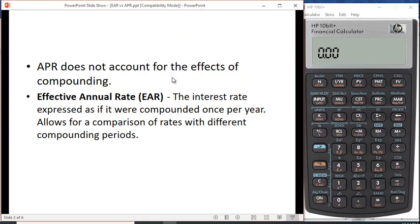Now what the APR does not account for is the effects of compounding. We know from compounding you get interest on interest, so you're actually going to have a higher effective rate.